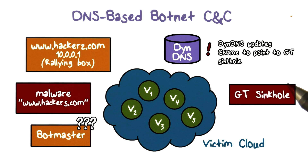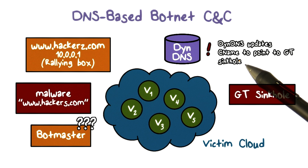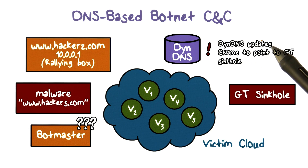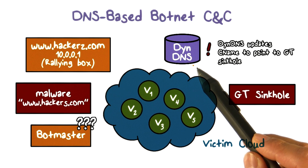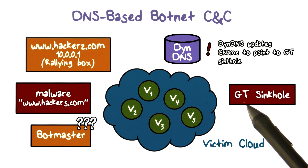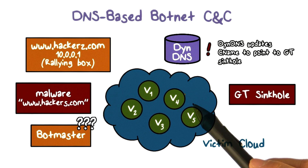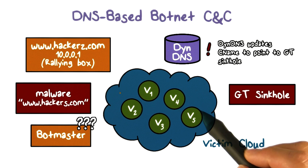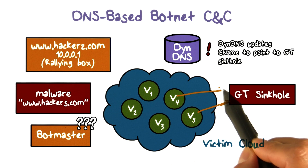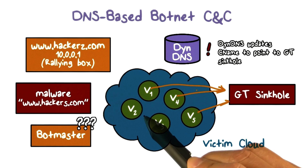Once we identify that hackers.com is used for botnet C&C, there are a number of responses available. One option is for the dynamic DNS provider to set a mapping of hackers.com to the IP address of a sinkhole. That is, instead of giving the IP address of the C&C machine to the bots, the dynamic DNS provider would give the IP address of the sinkhole to the bots. Therefore, instead of connecting to the actual C&C server, all the bots will be connecting to a sinkhole machine.